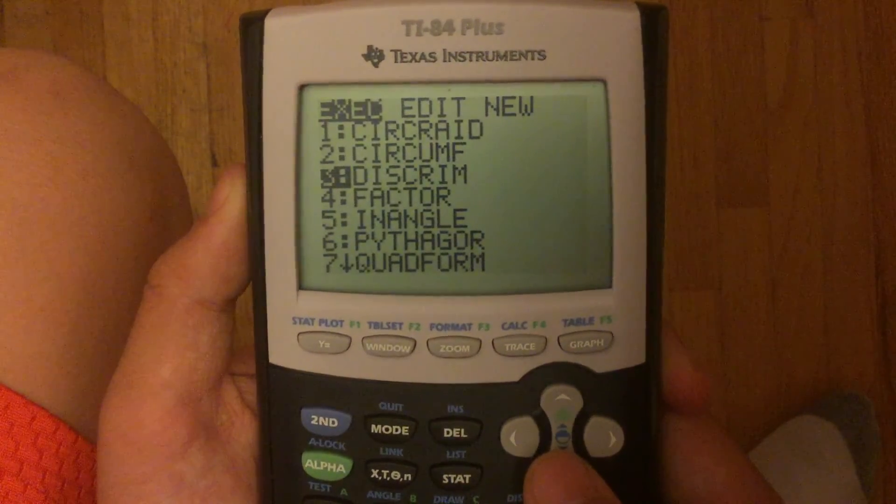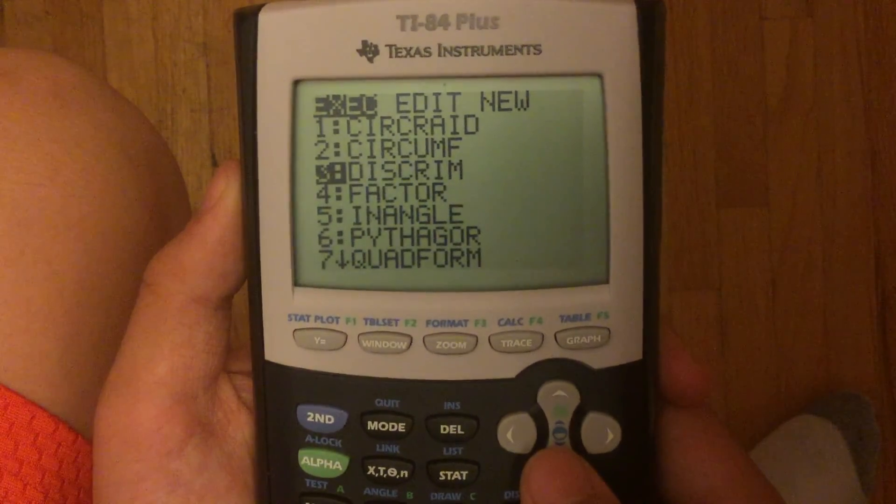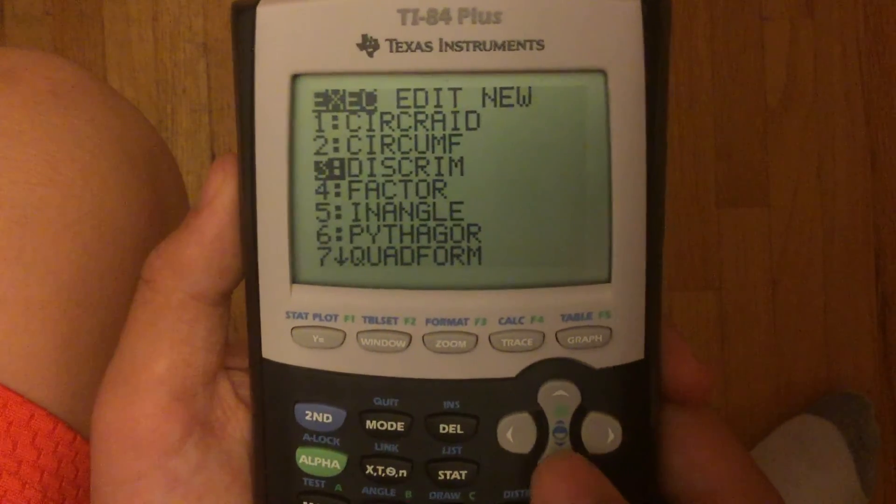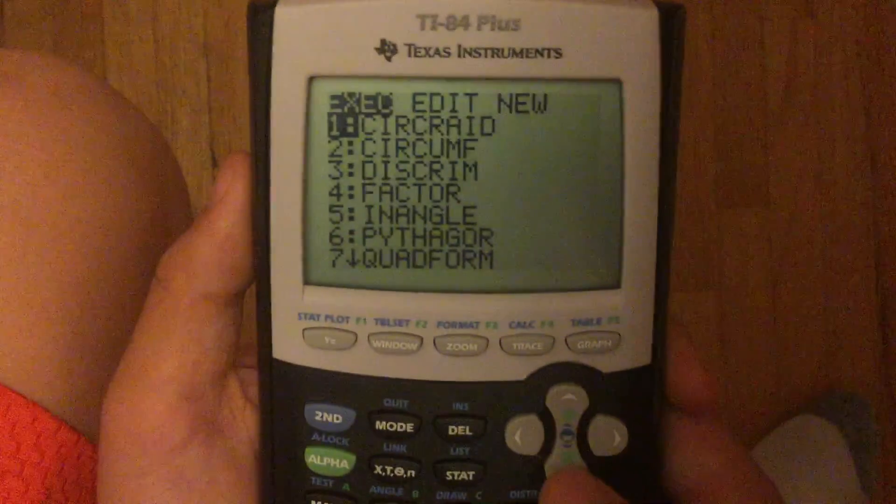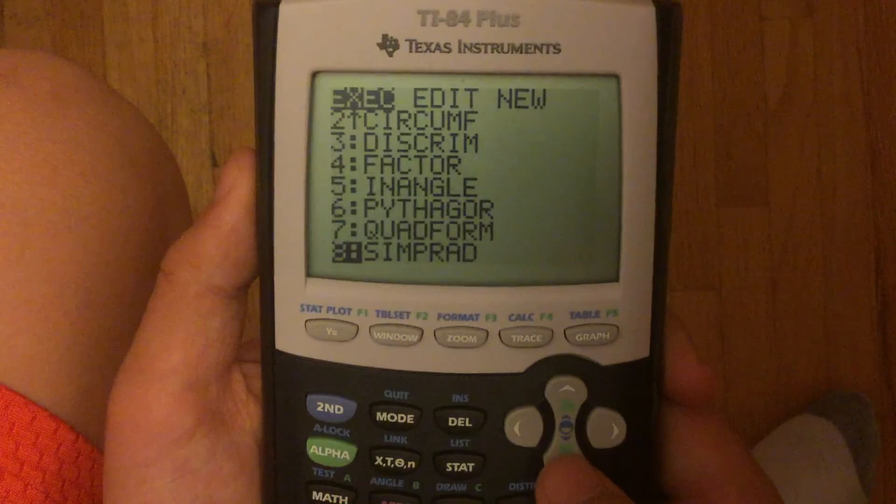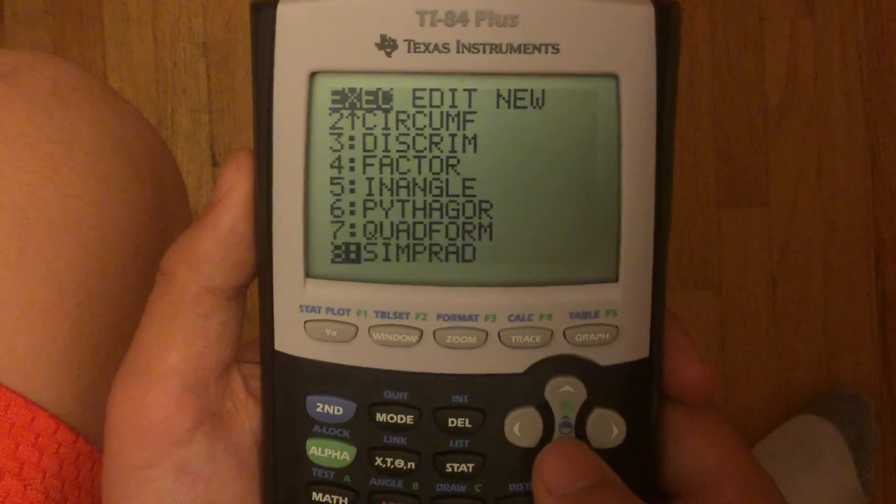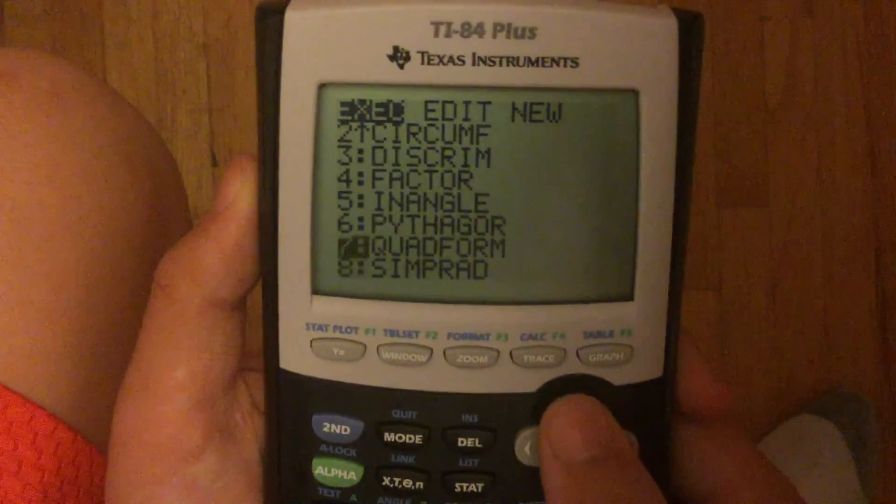I don't know what this is. I forgot about that. Probably some algebra thing. Pythagorean theorem. Quadratic formula. Quad form. And simplify radical, I think, is the last one.